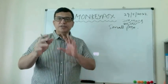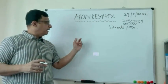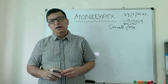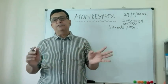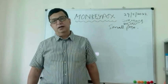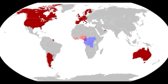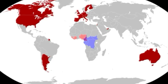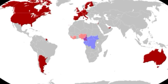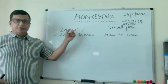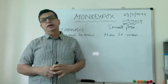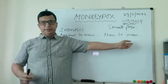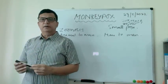Monkeypox has been endemic to the Congo area and West Africa, with cases occurring on and off. Cases around the world have come from travelers returning from African countries, as you can see on the worldwide spread map. It is a zoonotic infection coming from rodents and monkeys to humans, but human-to-human transmission is also occurring.